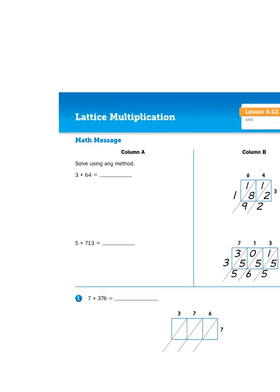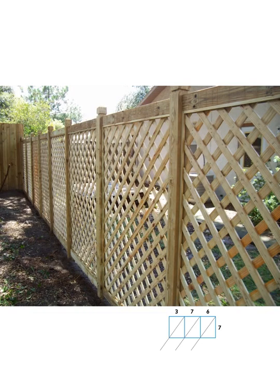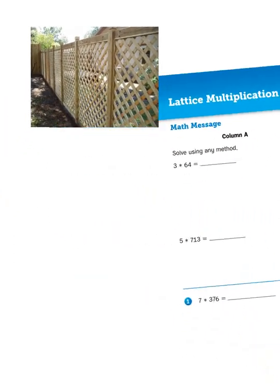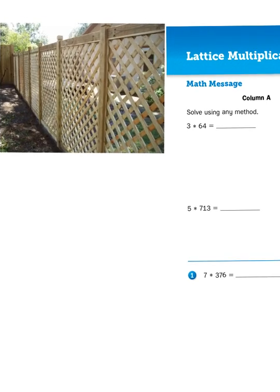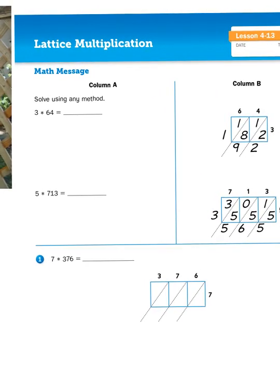So first of all, what is lattice? Well, lattice as a building product looks something like this — it's a crisscross of boards that create a pattern, as you can see in this fence right here. The lattice is made up of diagonals and crisscross patterns, and that's going to be important because in lattice multiplication you're going to see some crisscrossing numbers.